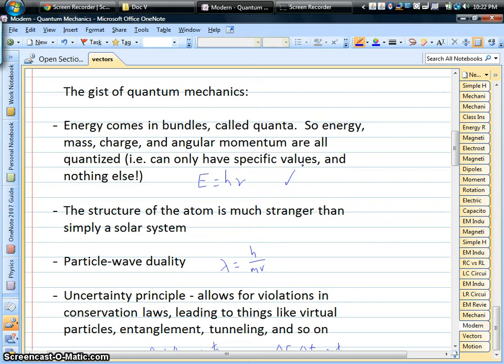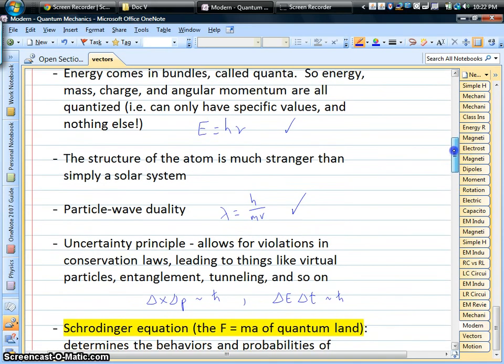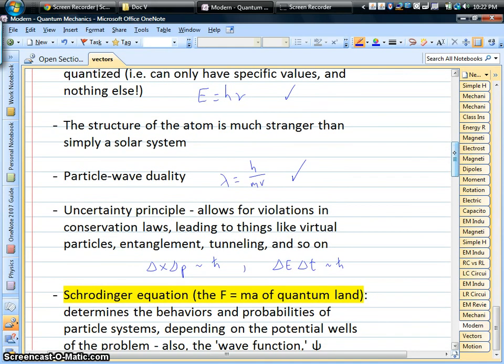In chemistry, you get into the weird structure of atoms. It's not a simple solar system. You talk about electron waves, electron clouds around the nucleus, particle-wave duality where electrons behave like waves, and the uncertainty principle. You know things are weird when a law of nature is called uncertainty.